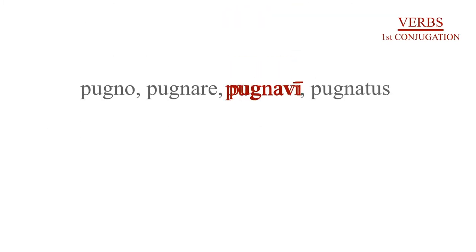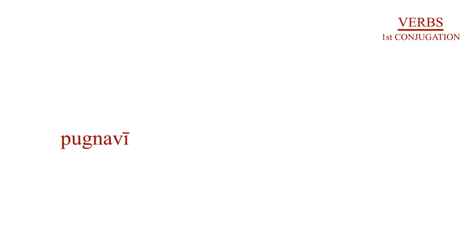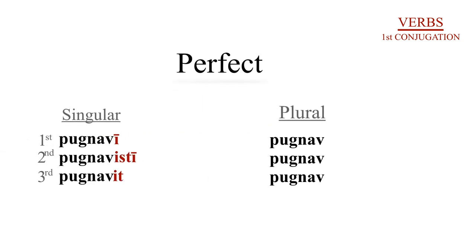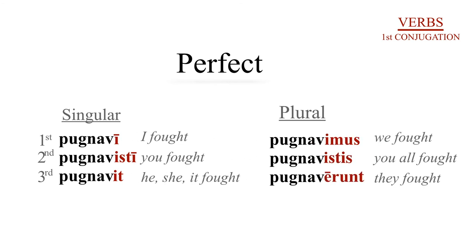Now we come to the perfect system. If you'll notice, we're looking at the third principal part, pugnavi. What we'll do is take off the -i, keep the stem of the perfect, pugnav-, and apply your personal endings. For example: first person singular, pugnavi, I fought. Second person singular, pugnavisti, you fought. Third person singular, pugnavit, he, she, or it fought. First person plural, pugnavimus, we fought. Second person plural, pugnavistis. Third person plural, pugnaverunt, they fought.